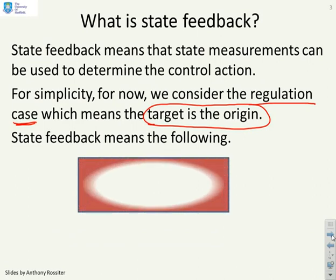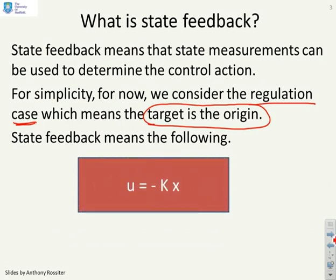State feedback means the following: the input is given by some linear combination of the states. So u equals minus K times x, and K is your state feedback matrix.